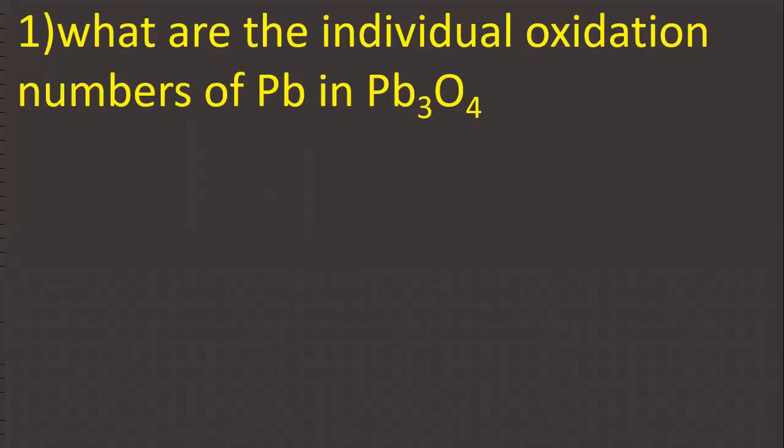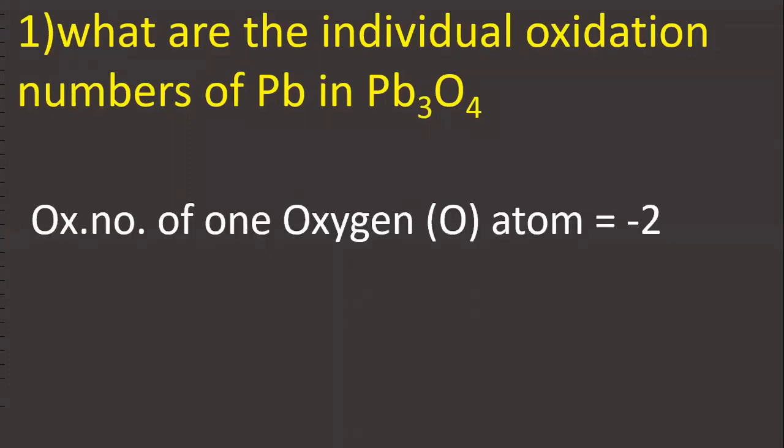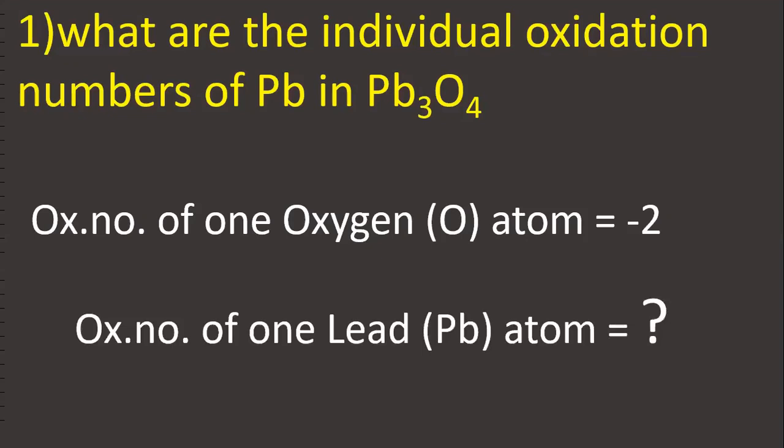What are the individual oxidation numbers of lead in Pb₃O₄? Oxidation number of one oxygen atom is -2. What is the oxidation number of one lead atom?